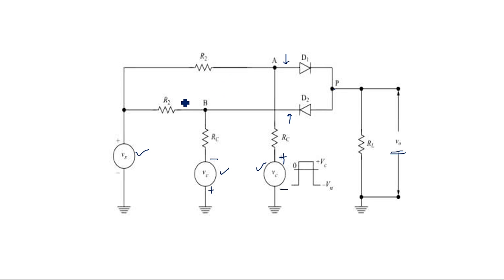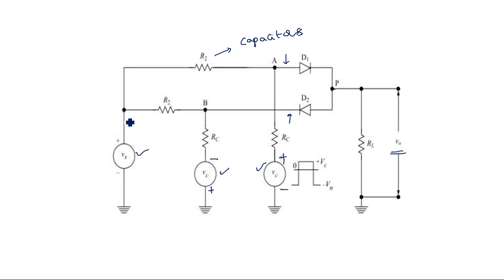There are two resistors R2 being used here. Previously they were capacitors - the standard circuit diagram uses capacitors, as seen in previous videos - but now the capacitors are replaced by resistors. The input signal Vs with positive and negative is connected through these two resistors.